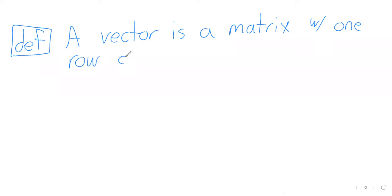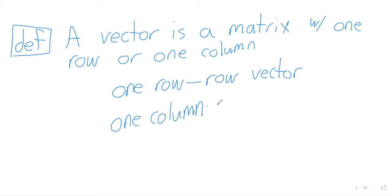So we'll start with a definition. A vector is a matrix with either one row or one column. A matrix with one row is called a row vector. And a matrix with one column is called a column vector.